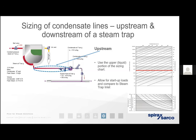Just as steam condenses far more readily in cold distribution pipework, the same is true at the process, so we want a safety factor of ideally times three. If we sized the pipework to accommodate only 100 kilograms per hour and the system was starting up from cold, the increased condensate load could back up ahead of the trap and slowly start to flood the process. The chart on the right-hand side of the screen enables us to correctly size condensate pipework under pressure, and you can refer to that useful app for assistance on correct condensate pipe sizing.